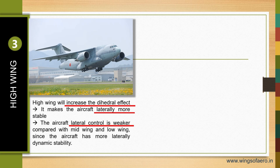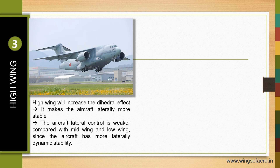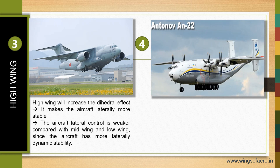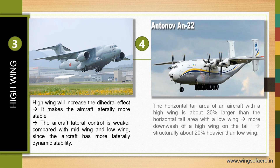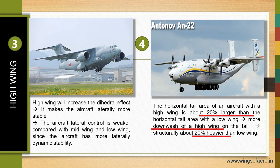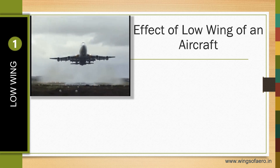The high wing increases the dihedral effect, making the aircraft laterally more stable, though lateral control is weaker compared with mid wing and low wing since the aircraft has more lateral dynamic stability. An example is the Antonov AN-22. The horizontal tail area of a high wing aircraft is about 20% larger than that of a low wing, providing more downwash on the tail, and is also structurally about 20% heavier than the low wing.